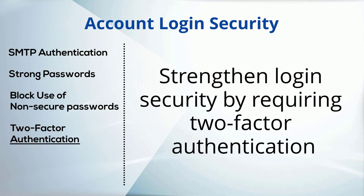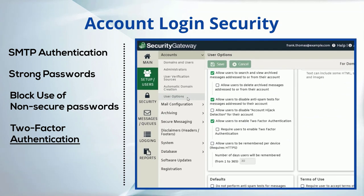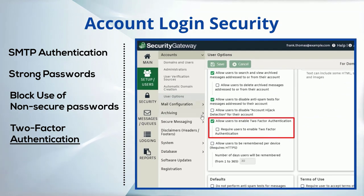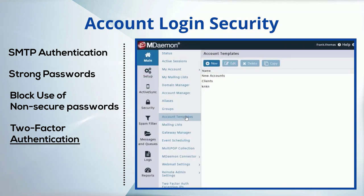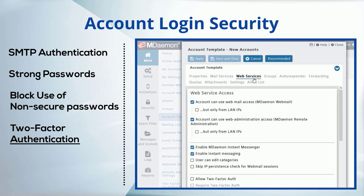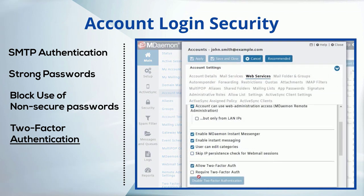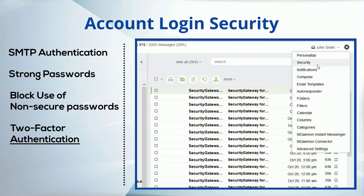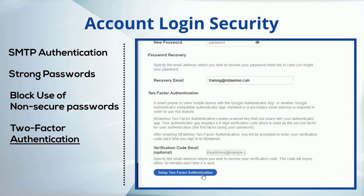Use two-factor authentication whenever possible. In Security Gateway, two-factor authentication settings are located under the User Options screen. And in MDaemon Remote Administration, they're located under Account Templates, Web Services, and under the Web Services screen within each individual account. End users can enable two-factor authentication via the Security menu in MDaemon Webmail.